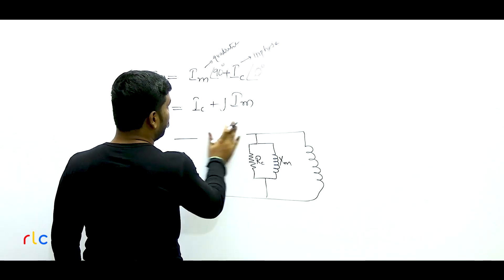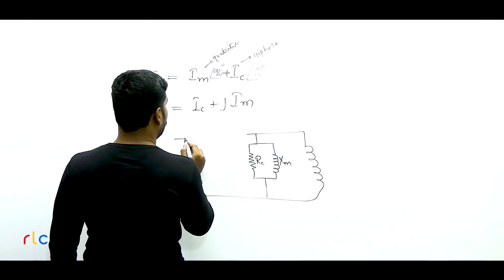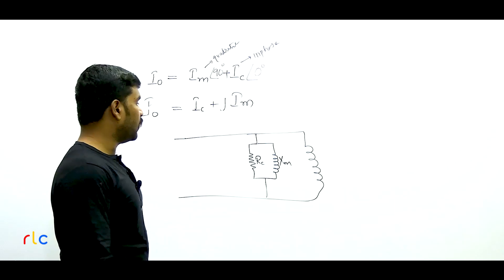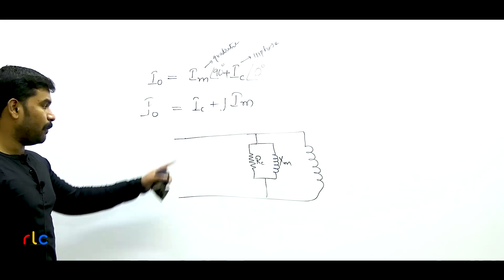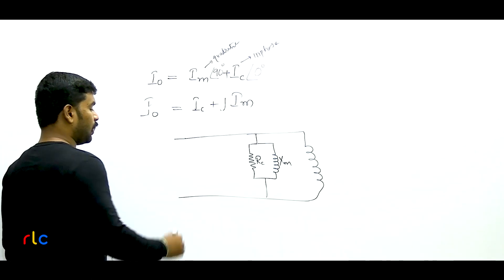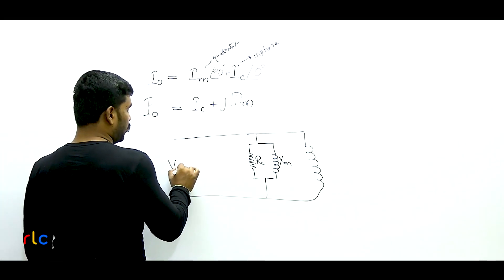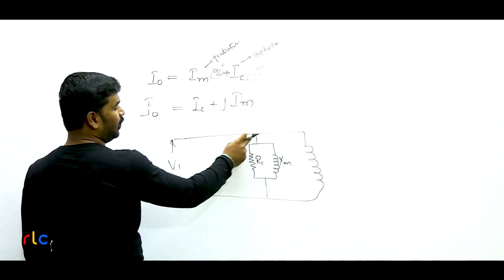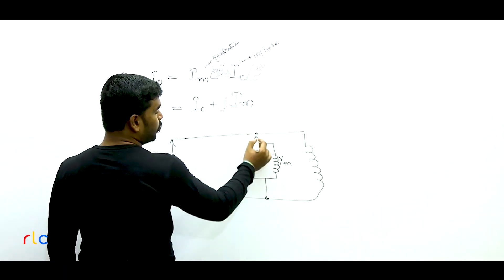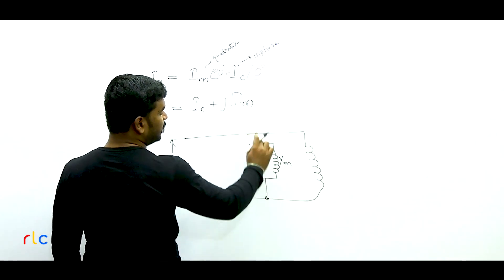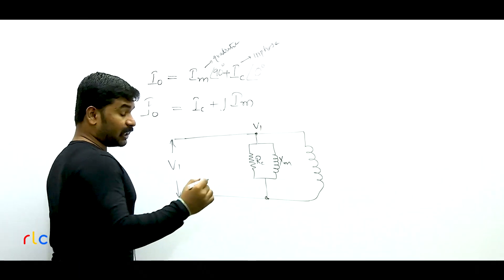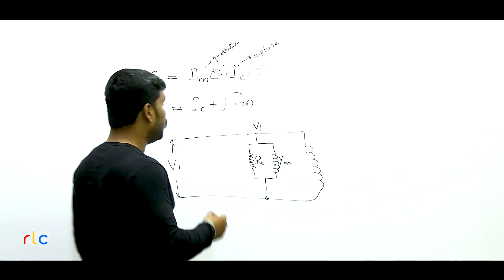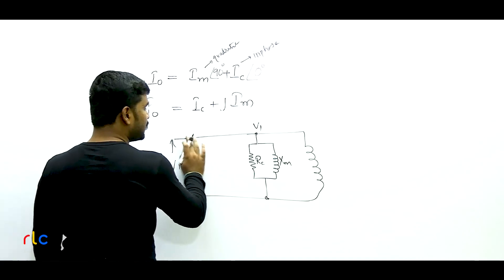Seventh question: Maximum efficiency for a transformer occurs at 80% of full load. Find the ratio of core loss PC to ohmic loss POH. The condition for maximum efficiency is: variable loss = constant loss, i.e., X² × WCU = WI, where X is the fraction of load and WCU is full load copper loss. So PC/POH = X². Since maximum efficiency occurs at 80% load, X = 0.8, therefore PC/POH = 0.8² = 0.64. Option C is the right answer.